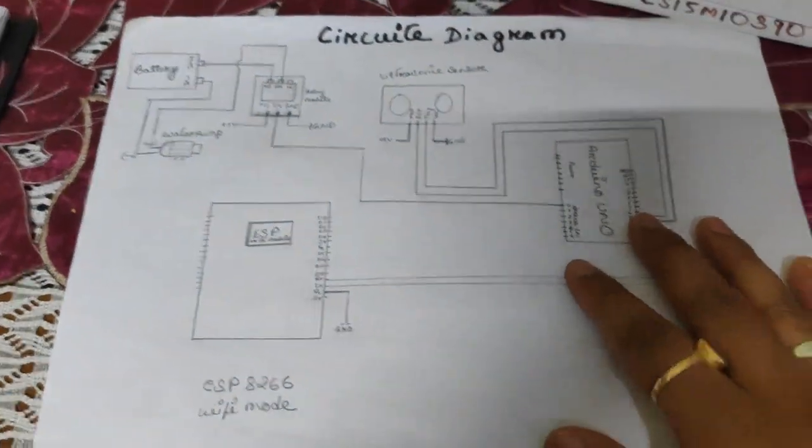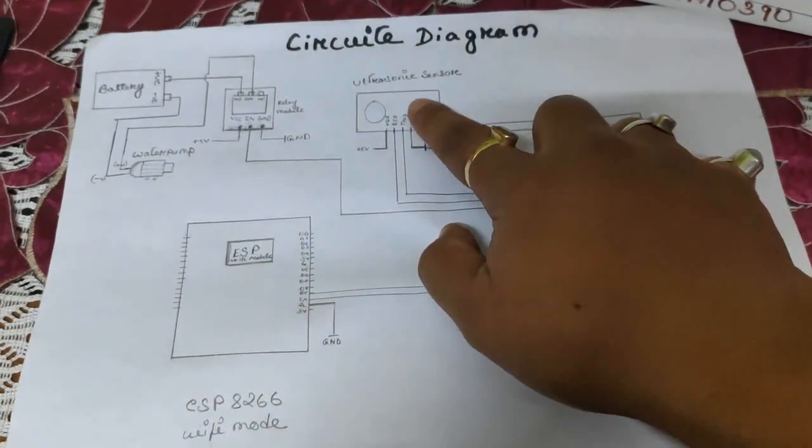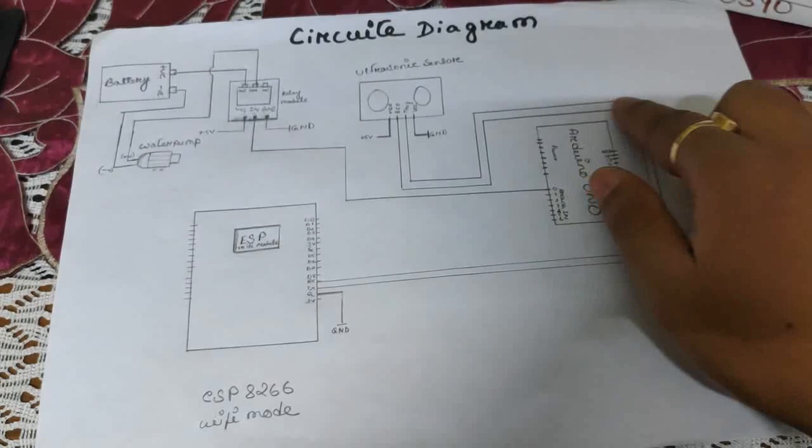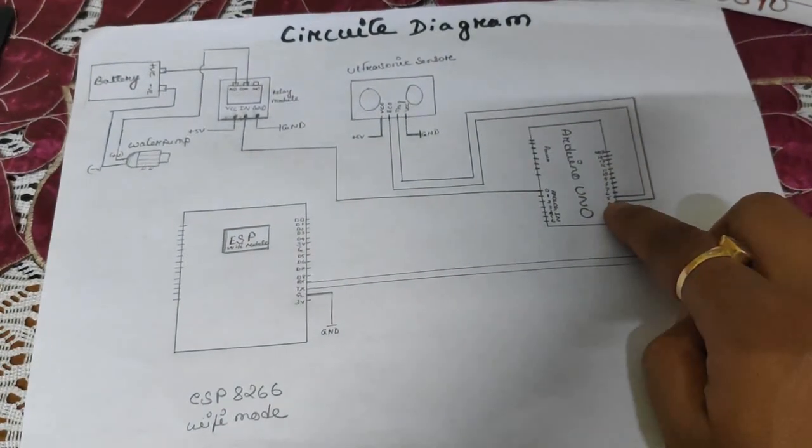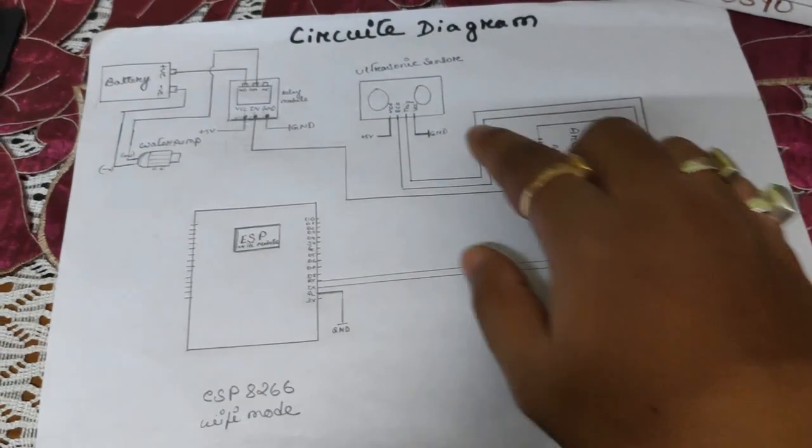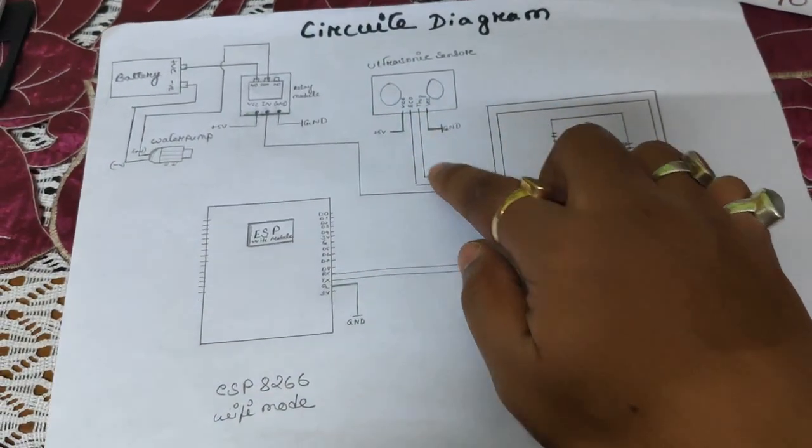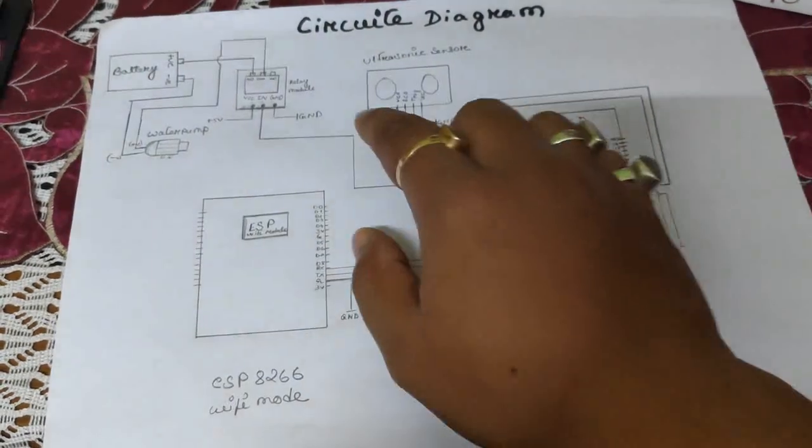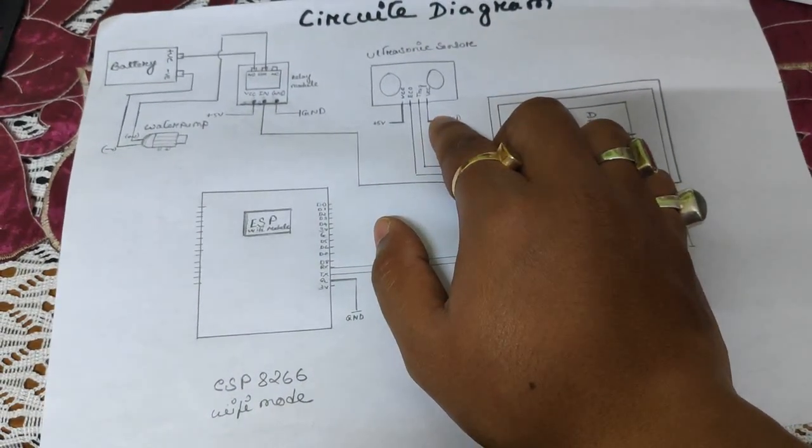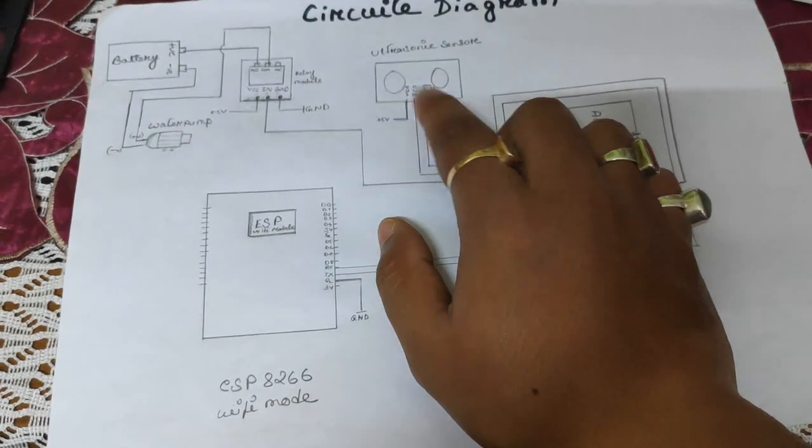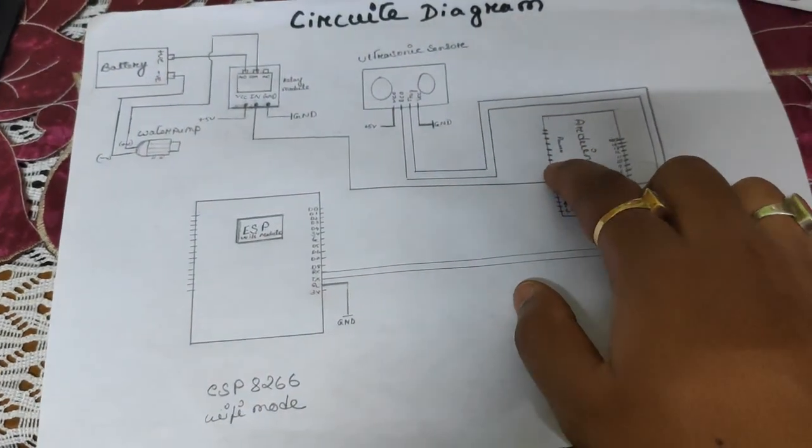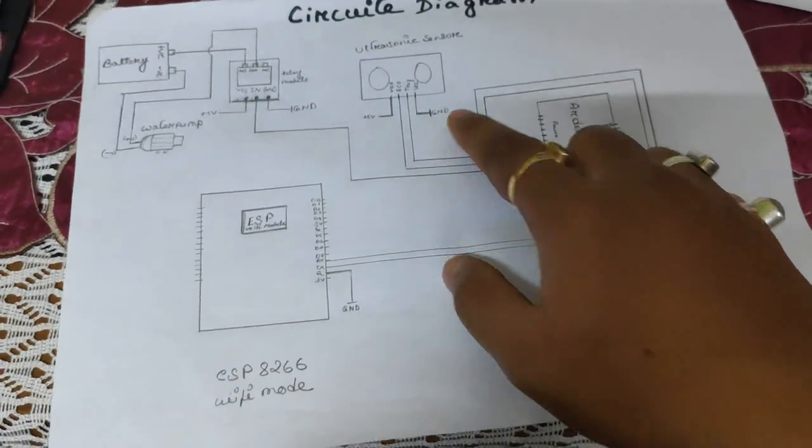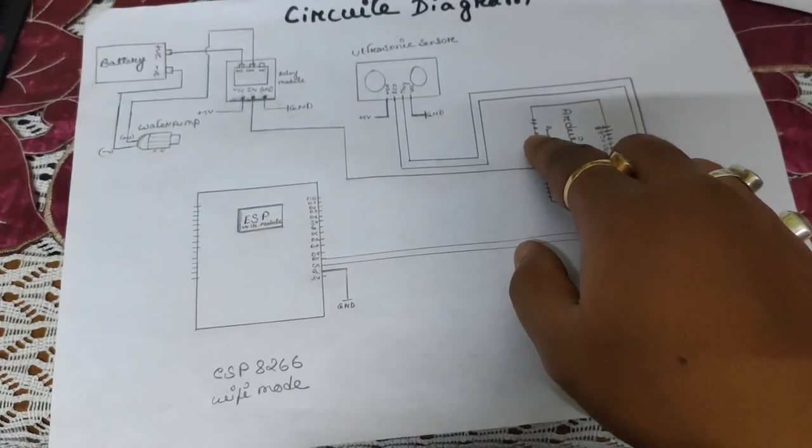So first of all, this is the ultrasonic sensor. The trigger pin of the ultrasonic sensor is connected to pin number 4 of the Arduino, while the echo pin of the ultrasonic sensor is connected to pin number 5 of the Arduino. The VCC and GND, that means ground pin, is connected to the Arduino's ground pin.